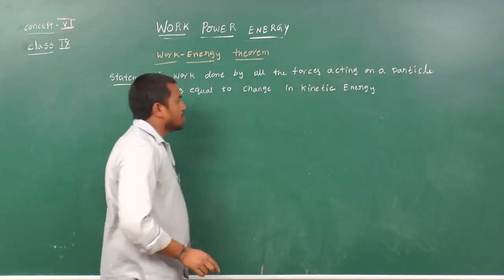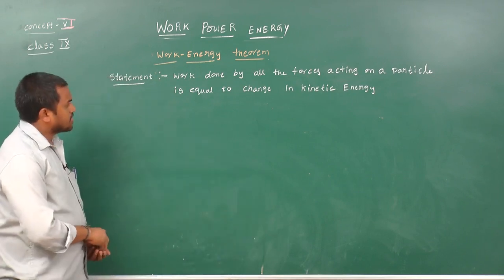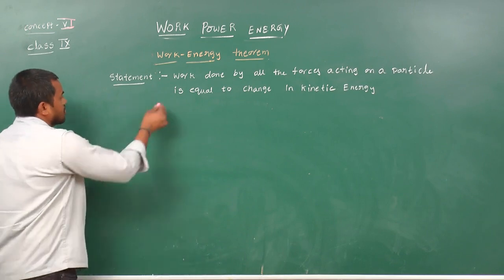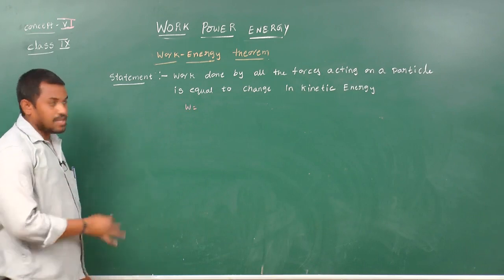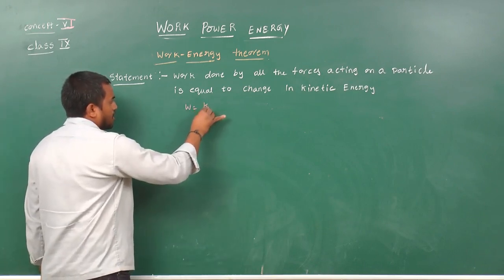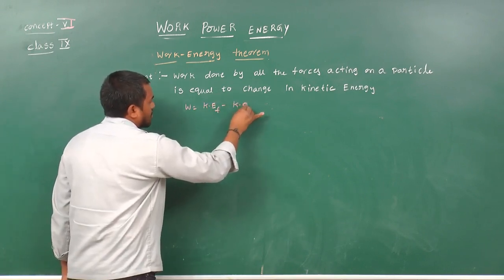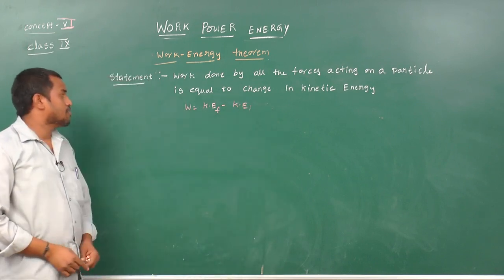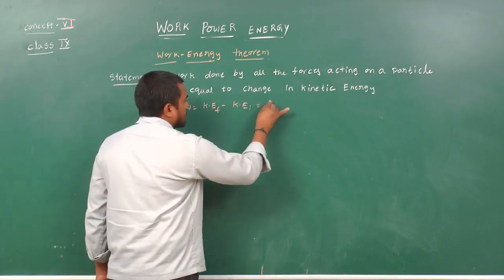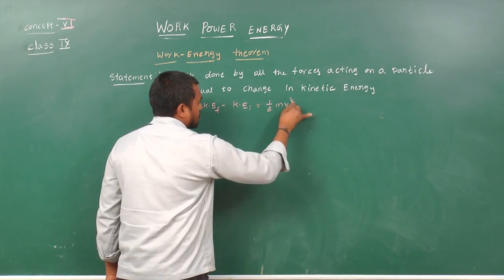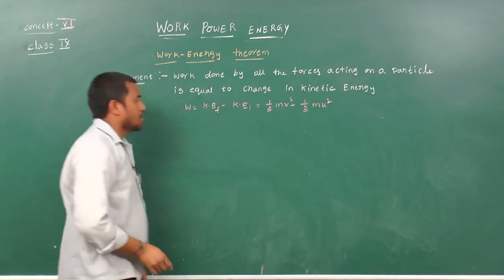This theorem is applicable not only for a single particle, it is also applicable for entire systems. Work done by all forces equals the change in kinetic energy, that is, final kinetic energy minus initial kinetic energy: ½mv² minus ½mu², where final velocity is v and initial velocity is u.